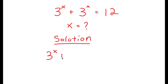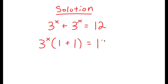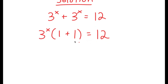I have 3 to the power of x plus 3 to the power of x is equal to 12. What I'm first going to do is factor out 3 to the power of x. So I get 3 to the power of x times 1 plus 1 is equal to 12. Now, 1 plus 1 is 2, so I get 3 to the power of x times 2 is equal to 12.